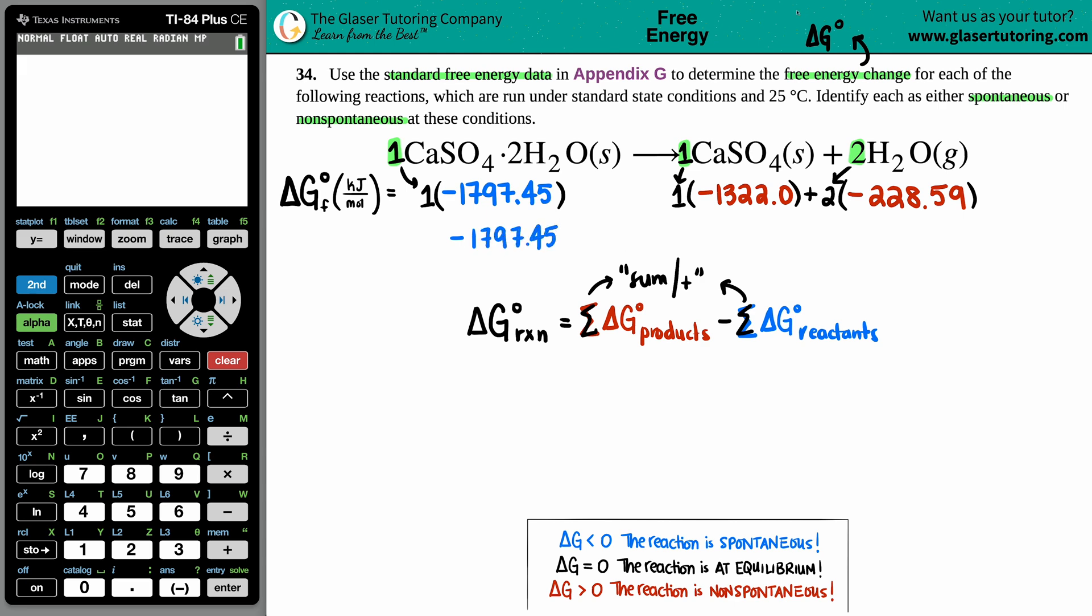Now I'm going to go to my calculator to find out what this is. I could probably plug this in in one shot. I'm going to say negative 1322—you could say plus zero, but that's the same thing—plus two times negative 228.59. I get negative 1779.18. Now I have my two values that I'm going to use in my equation.